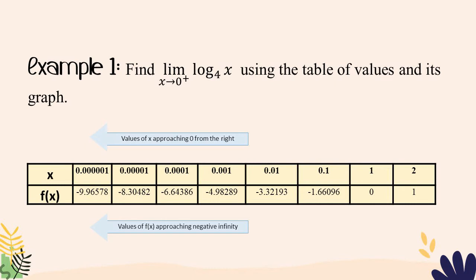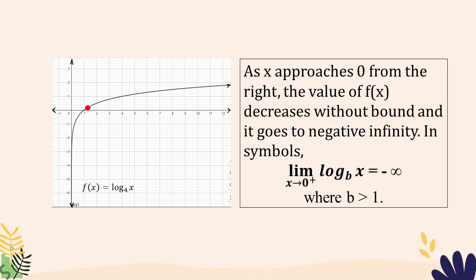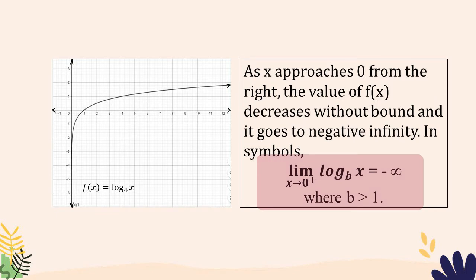Now look at the trend of the values of f(x). Are the values increasing without bound, decreasing without bound, or approaching a certain number? Here is the graph of f(x) = log base b of x. As x approaches 0 from the right, the value of f(x) decreases without bound and goes to negative infinity. We can also see this from the table — the values of f(x) go to negative infinity. Therefore, the limit of log base b of x as x approaches 0 from the right is equal to negative infinity, where b is greater than 1.